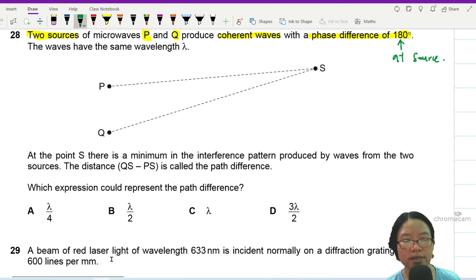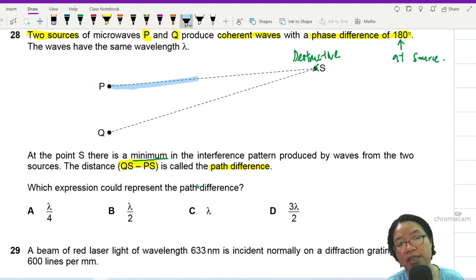At point S there is a minimum in the interference pattern. So here is destructive interference because of the word minimum. Distance QS minus PS is called the path difference. Yes we call this the path difference because it is the difference in distance traveled by wave P and wave Q. Let's say wave P travels here. The length of this blue line is shorter than the length of this pink line. That's why we take QS the longer line minus PS the shortest line.